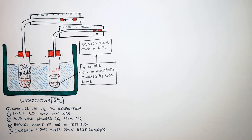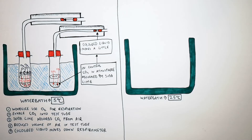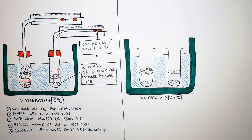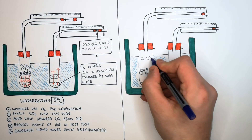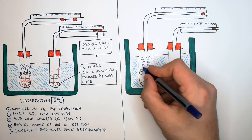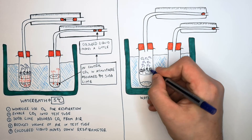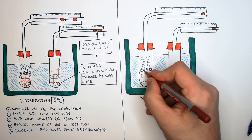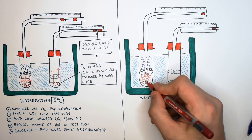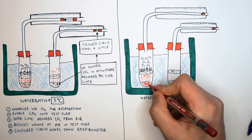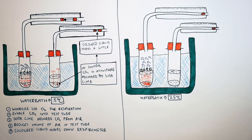Now we're going to measure the rate of respiration in wood lice in a water bath set at 25 degrees Celsius. Remember to use the same number of wood lice, the same volume of soda lime, and the same cotton wool in the same test tube as in the previous run at 5 degrees Celsius, and the same respirometer. At 25 degrees Celsius, we're going to see an increased rate of respiration because the wood lice are more active, so they inhale more oxygen and release more carbon dioxide, which is then absorbed by the soda lime.